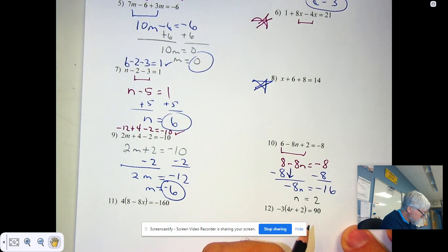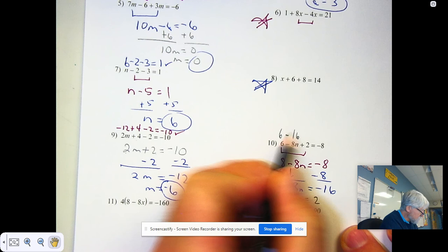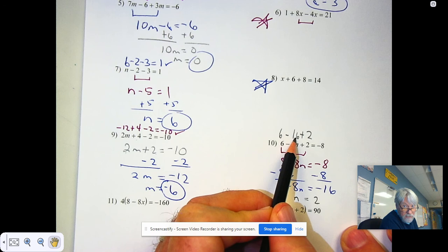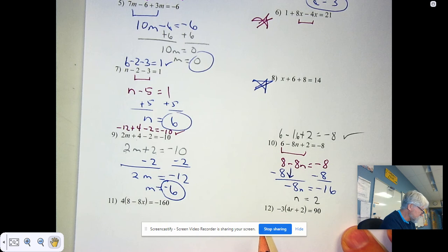n of 2. So 6n minus 8 times 2 is 16 plus 2n. 6 minus 16 is negative 10 plus 2 is negative 8. So it checks.